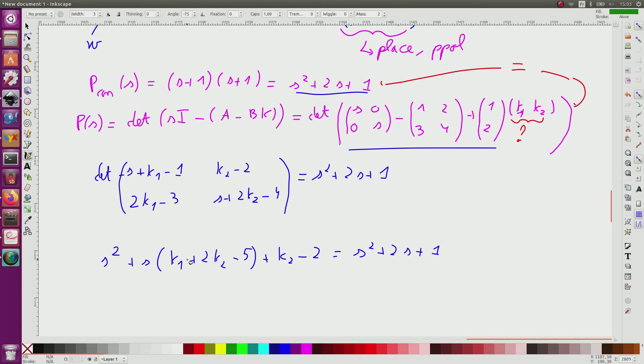So I have two polynomials of the same degree, 2, on the left and on the right. Then I should solve this should be equal to 2S plus 1.